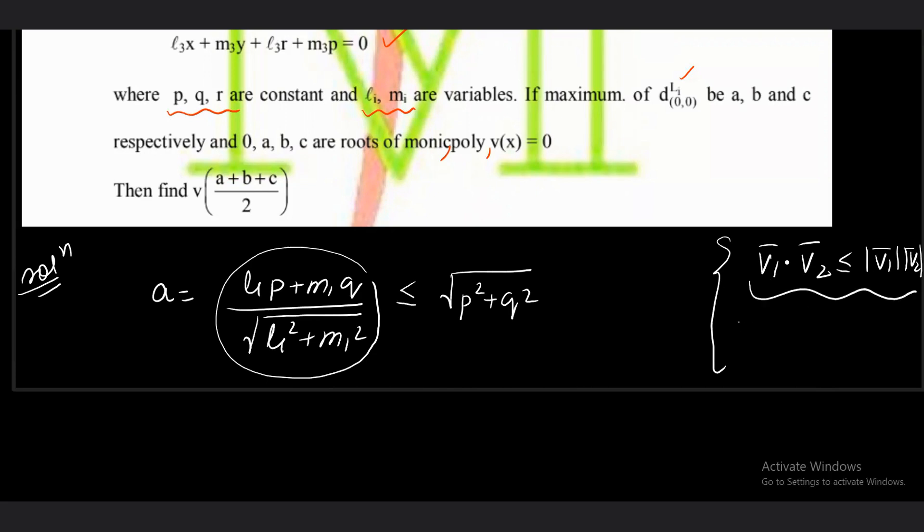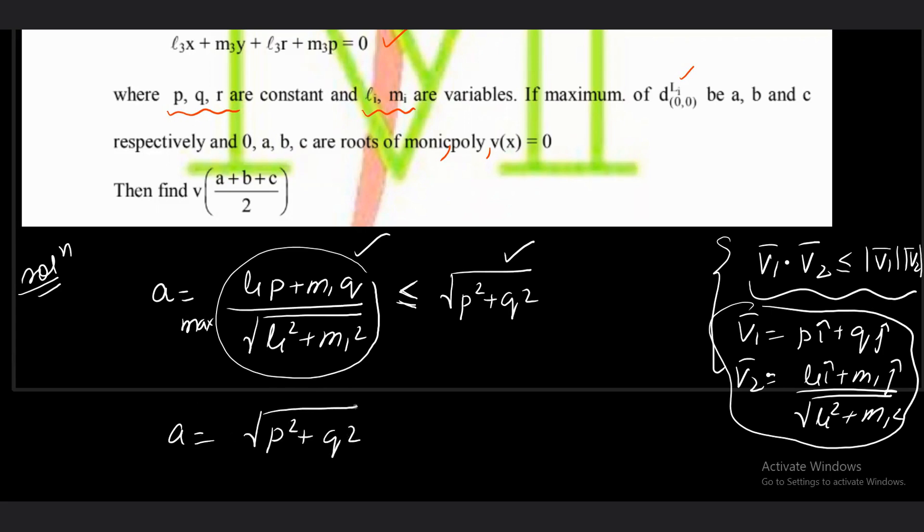Now take v₁ vector as p·i + q·j. Take v₂ vector as the unit vector l₁i + m₁j divided by √(l₁² + m₁²). v₁ · v₂ gives the same expression and this is going to be less than or equals to this quantity. So the maximum value a turns out to be √(p² + q²).